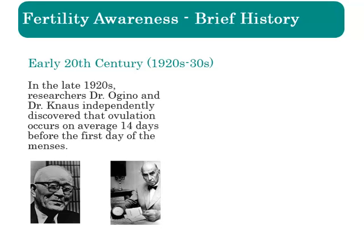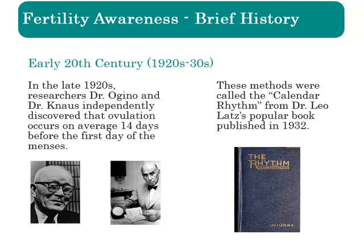In the late 1920s, researchers Dr. Ogino and Knaus independently discovered that ovulation occurs on average 14 days before the first day of the menses. Using this fact and the approximate lifespan of the egg and sperm, they and other physicians developed formulas to estimate the fertile time in a woman's cycle. These methods were called the calendar rhythm method, or later simply rhythm, due to Dr. Leo Latz's popular book published in 1932.